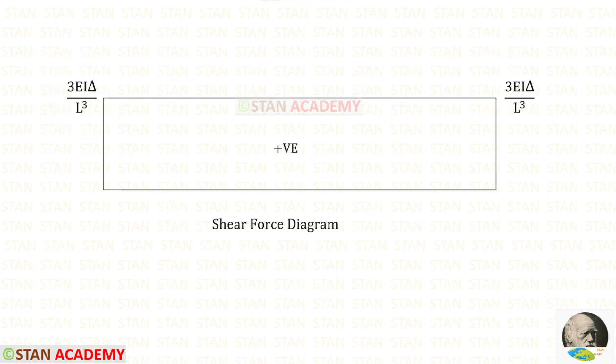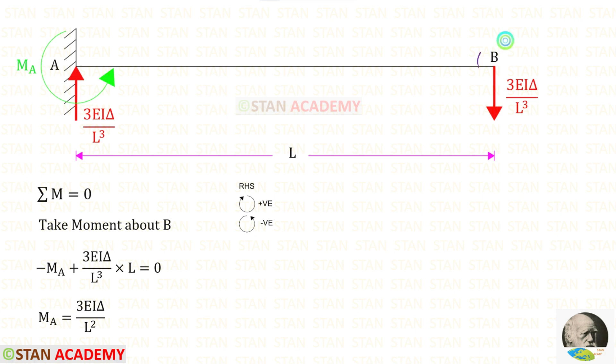Here you can see the shear force diagram. Now let us take moment about b and find ma. Ra is acting in the clockwise direction so it will be positive and the distance is l. Let us assume that ma is acting in the anticlockwise direction so it will be negative. We can eliminate this l and here it will be square.